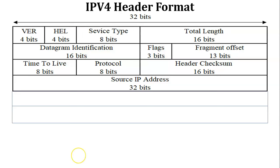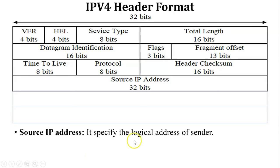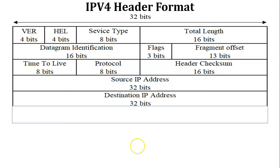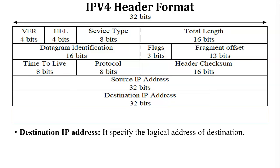The next field is Source IP Address, which contains 32 bits of data — this is the IP address of the sender. The next field is Destination IP Address, which also contains 32 bits of data — this is the IP address of the receiver. Both source and destination IP addresses are set by the sender. At the receiver side, both IP addresses are verified; if the destination IP matches, the datagram is accepted, otherwise it is discarded.